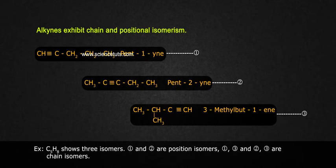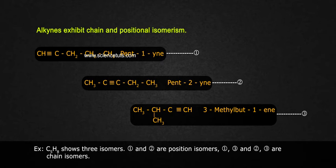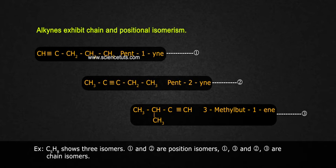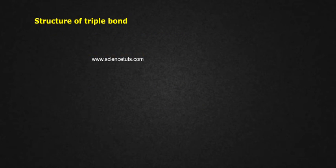For example, C5H8 shows three isomers. Isomers 1 and 2 are positional isomers, while isomers 1 and 3, and 2 and 3, are chain isomers.